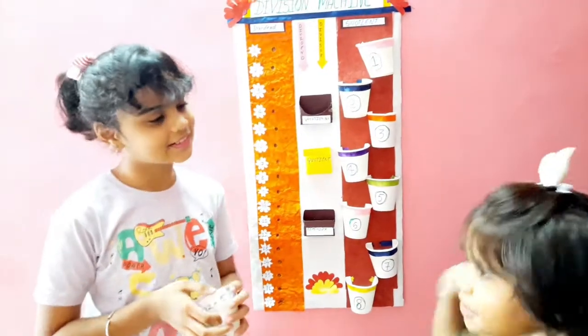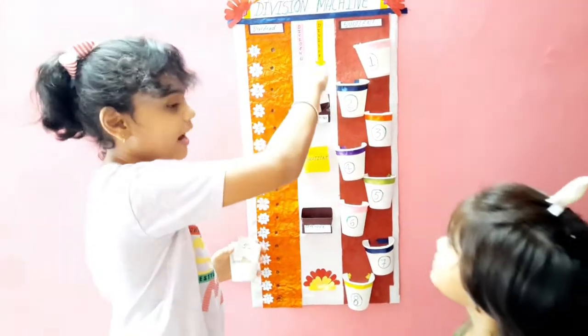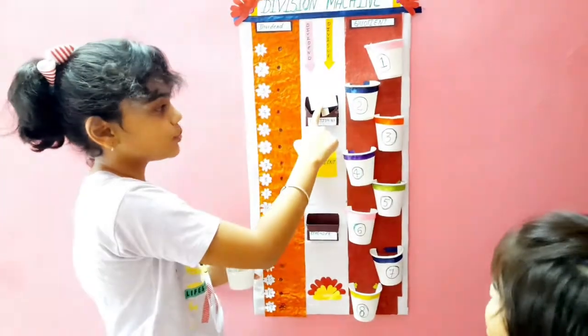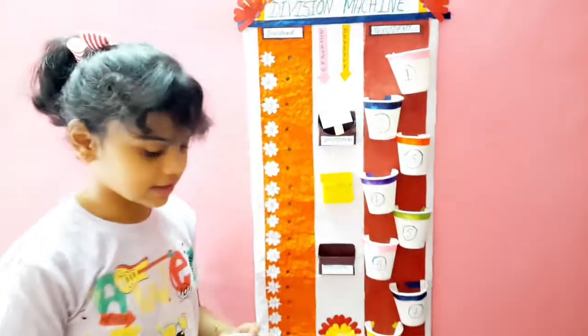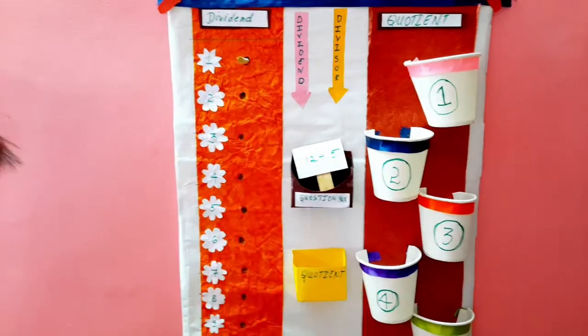Gigi, I enjoyed it. Let's do it again. Okay. Let's do it again with a harder number. That is, 12 divided by 5. Okay, Gigi, we should insert 12 sticks. Can I help you? Yeah.